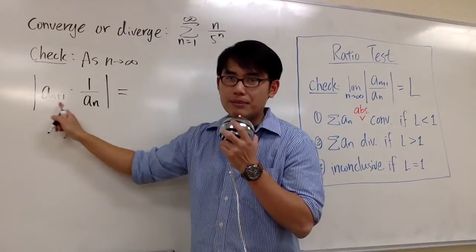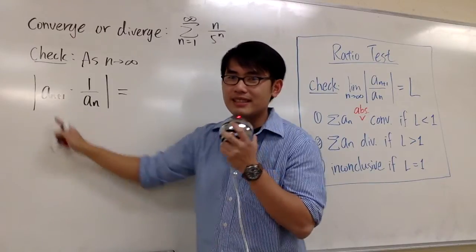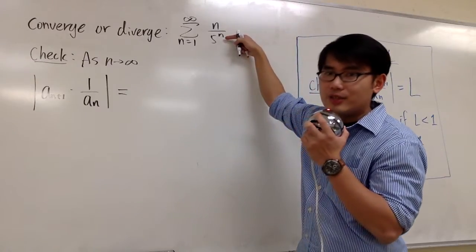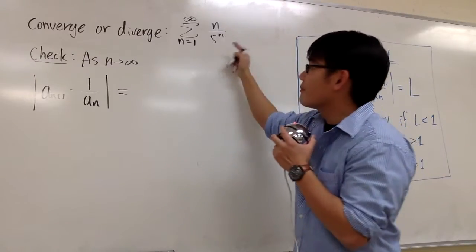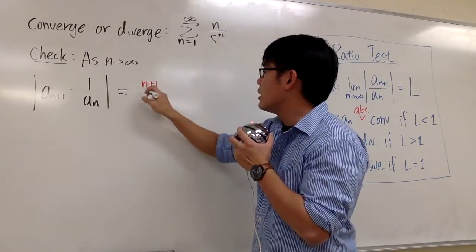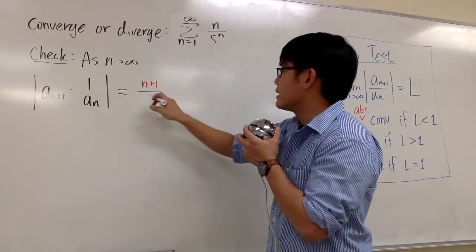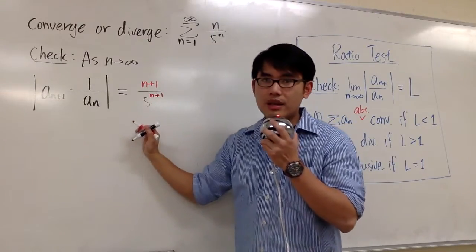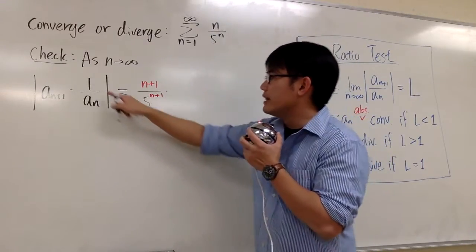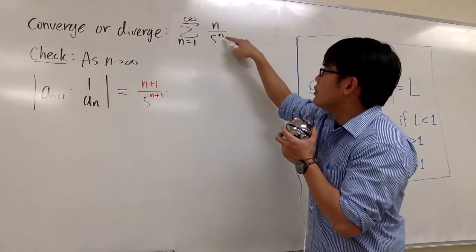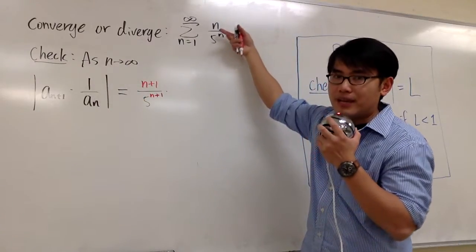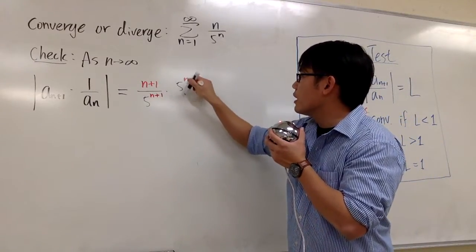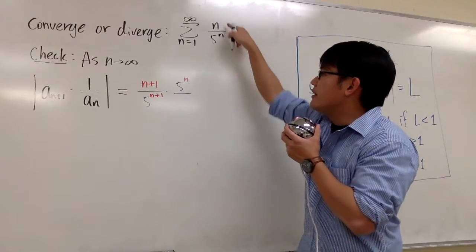So this right here, a n plus 1, how do we get the expression for that? We look back to the original. Instead of all the n right here that we had, change them to n plus 1. We will have n plus 1 over phi to the n plus 1. That's a n plus 1. Then we multiply by the reciprocal of a n. Look at the original and just switch it, flip that, make it upside down. We will have phi to the n on the top over the n on the bottom.